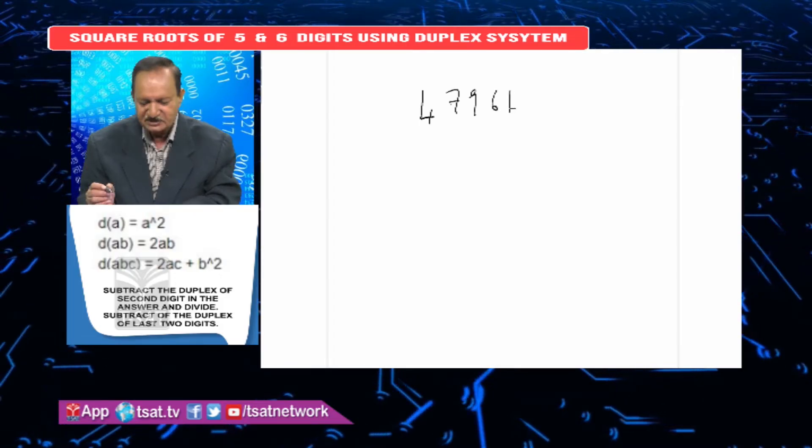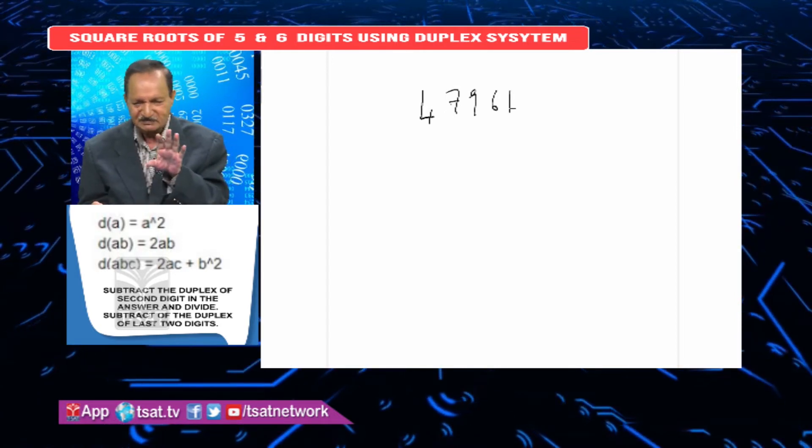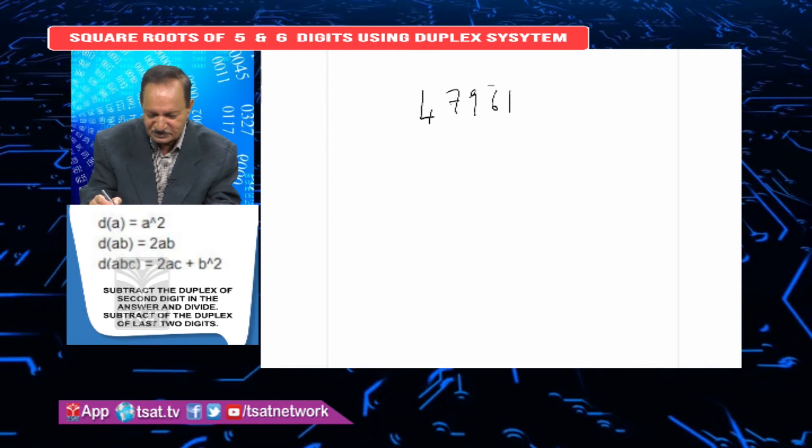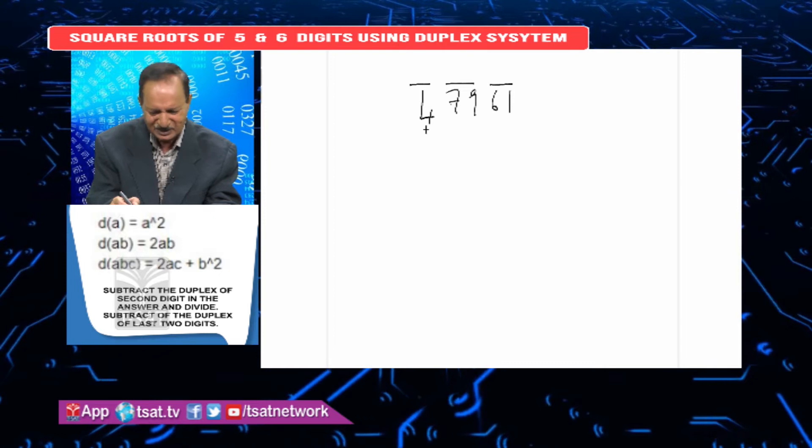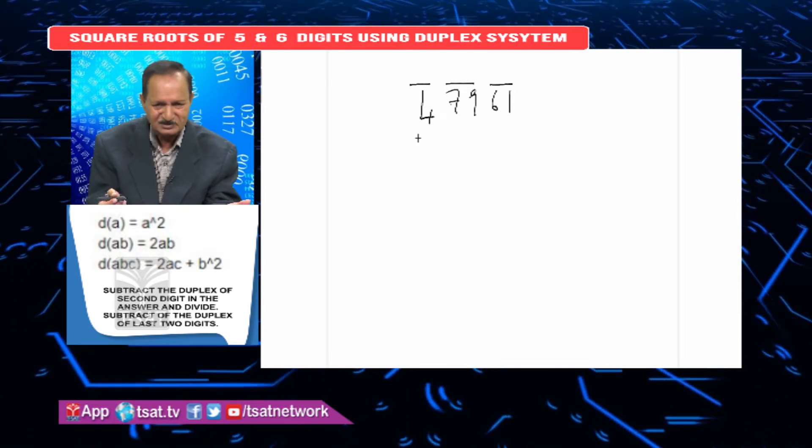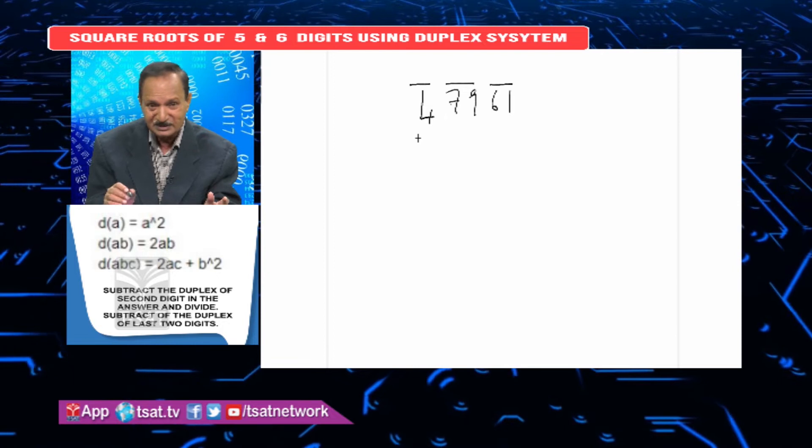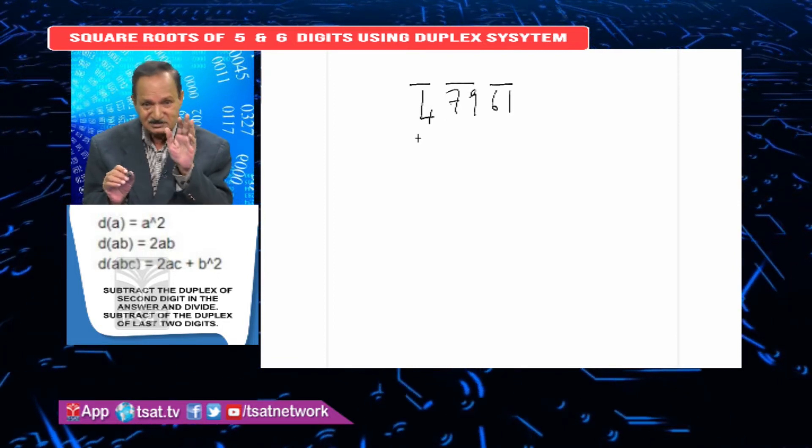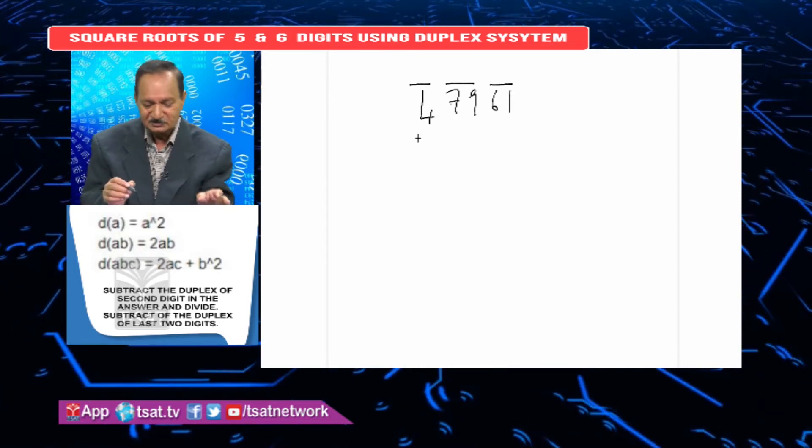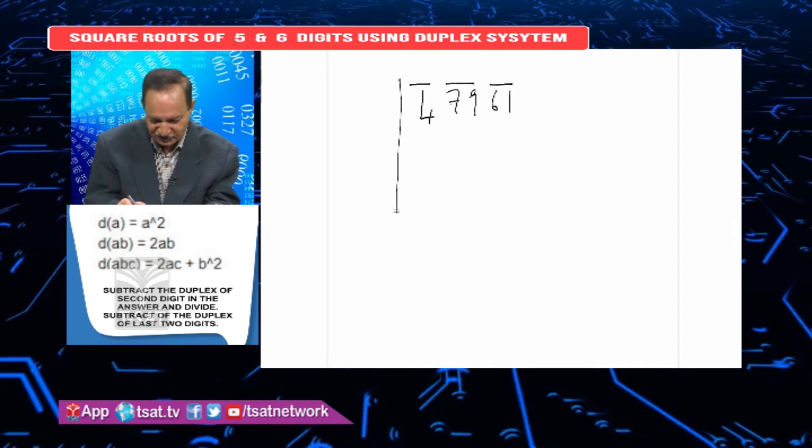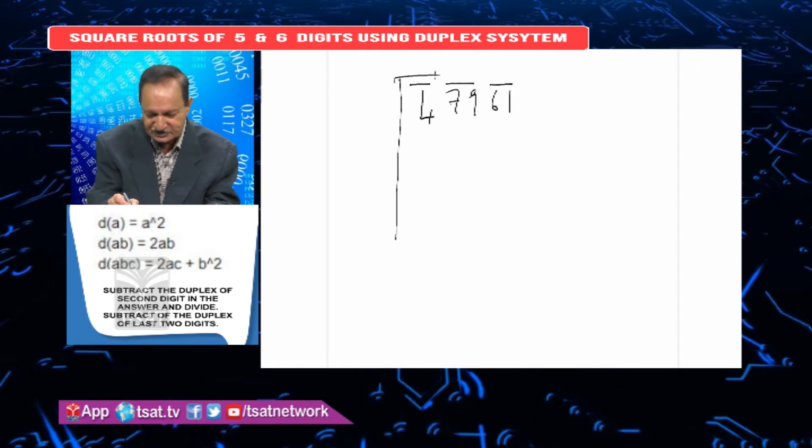Let's work an example: 47961. The first step is common - group the numbers. So 61 is one group, 79 is another group, and 4 is one group. With 3 groups, the answer will be 3 digits.